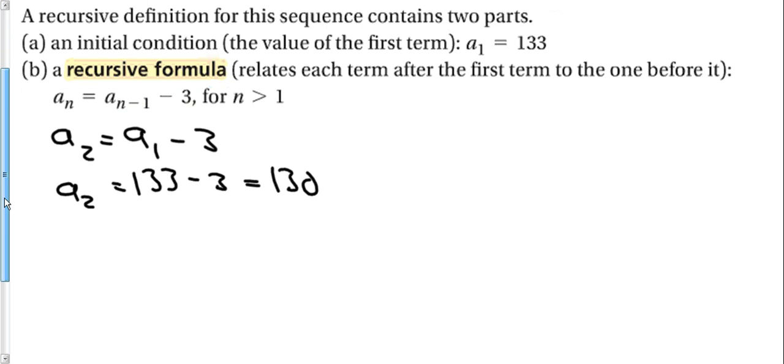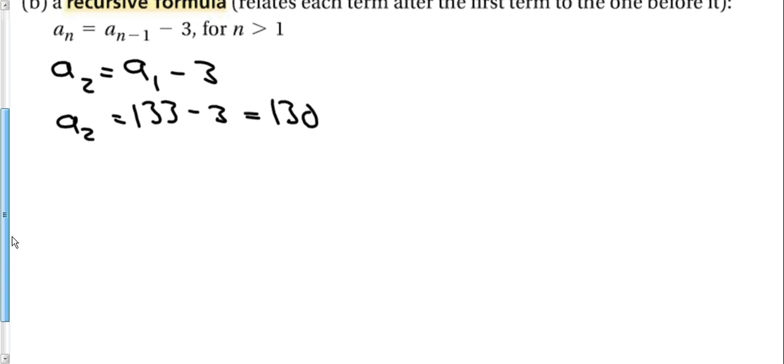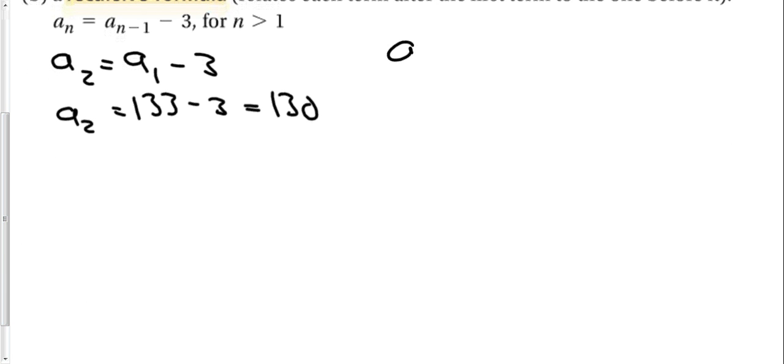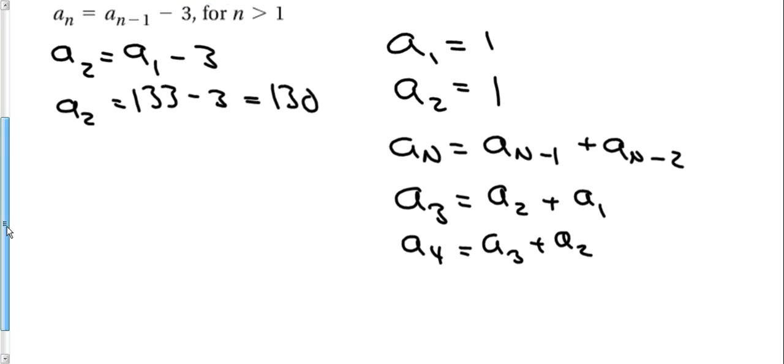One of the most famous recursive formulas is something called the Fibonacci sequence. One of the most famous recursive formulas looks like this. a sub 1 equals 1, a sub 2 equals 1. The recursive formula says that a sub n equals a sub n minus 1 plus a sub n minus 2. That means to get the third term I would have to take the second term plus the first term. To get the fourth term I would have to take the third term plus the second term. So for the Fibonacci sequence to work you take the two terms before it and add them together.